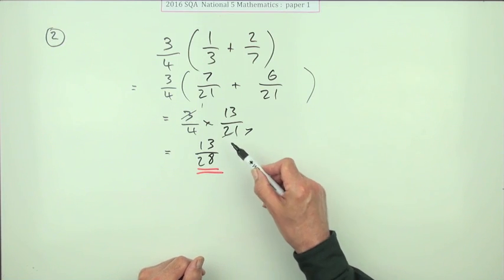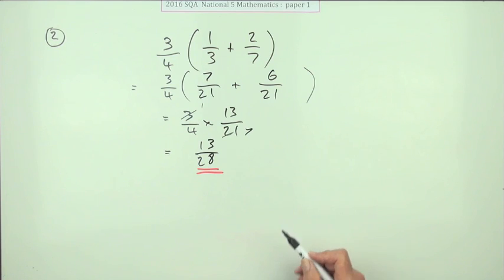It's better than having 39 over 84 and then puzzling how to cancel that down.